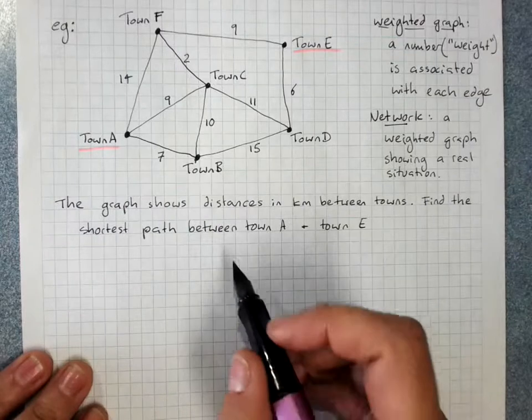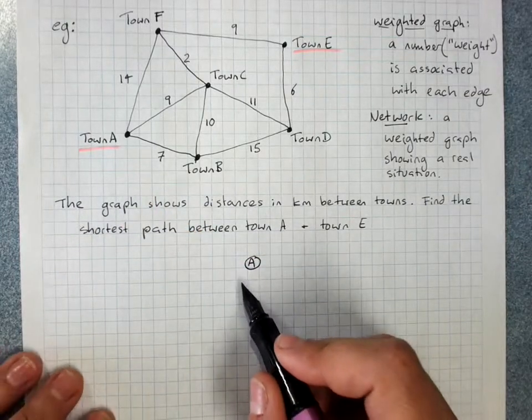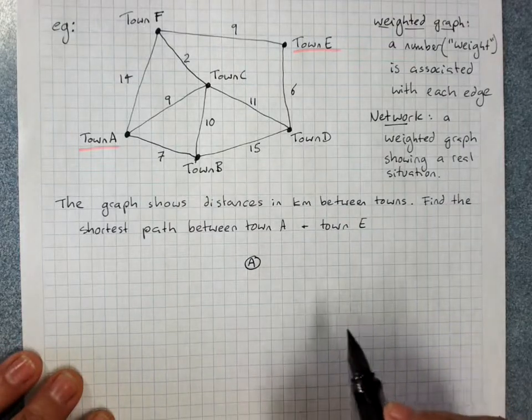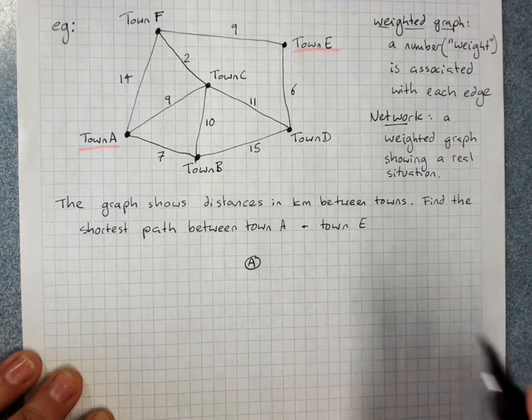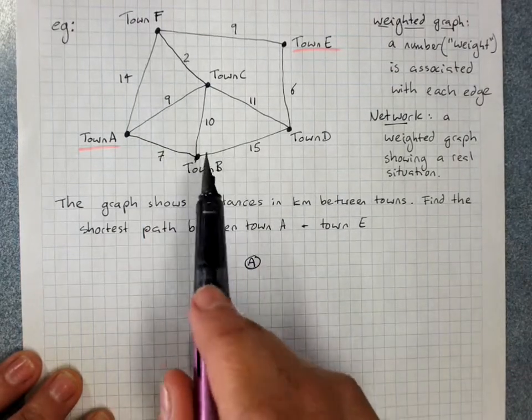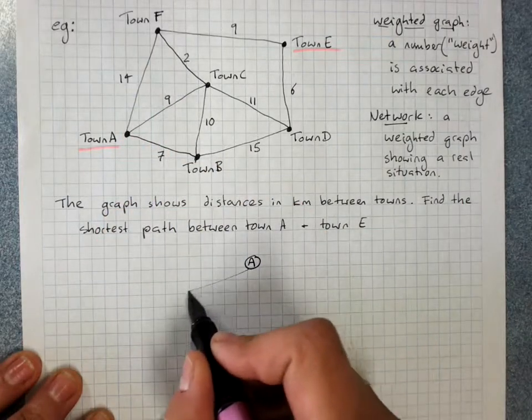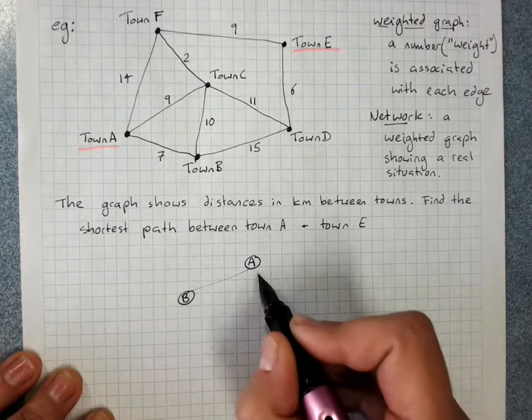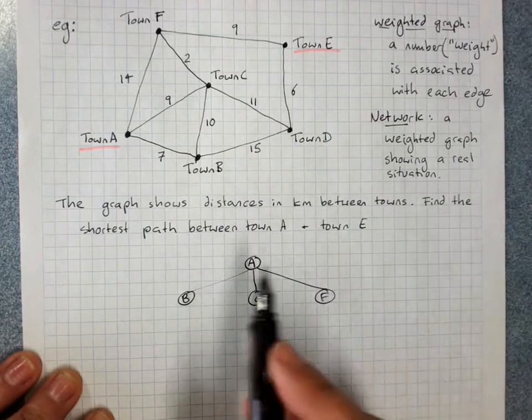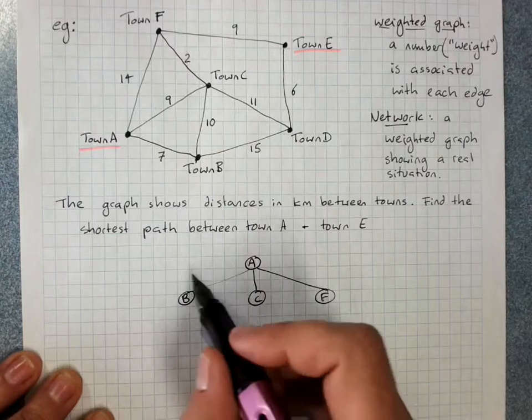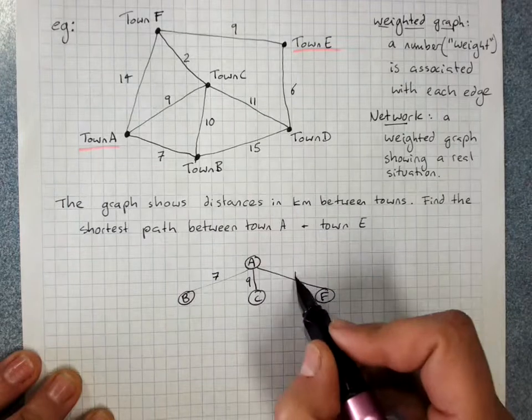You start at town A and work out where your options are from that. We're about to make a little tree diagram basically. I could go to B, C, or F. And the weights of those: 7, C was 9, F was 14.